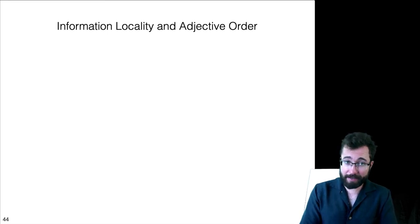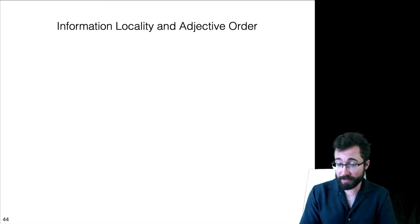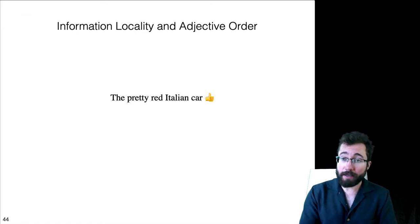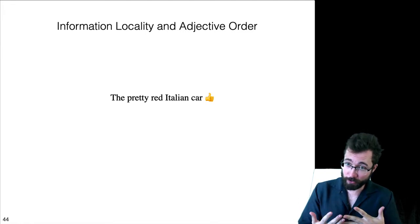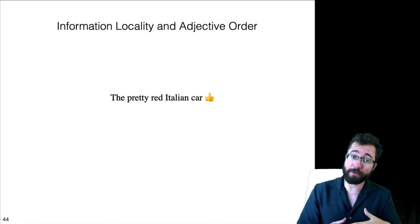So, now we're going to look at the ability of information locality to explain adjective order. So, what do I mean by adjective order? If you have cases of multiple adjectives modifying the same noun, in English, they have a certain preferred order that they go in. So, you can say the pretty red Italian car, I give that a thumbs up because it sounds okay.